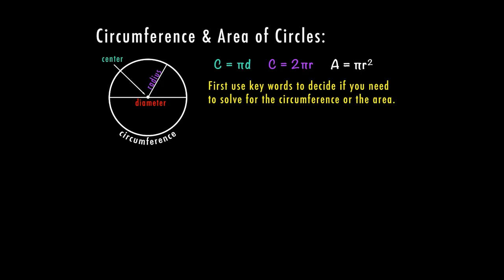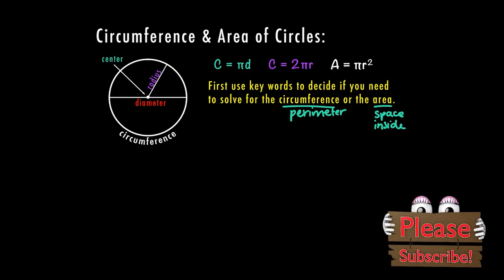Just to review, the circumference is basically the perimeter of a circle. So that would be the distance around, and the area is the space inside of the circle.